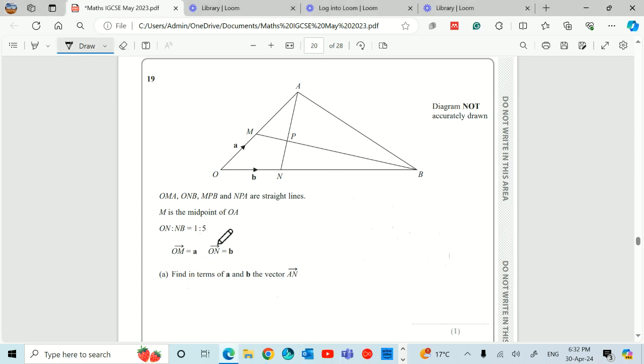Well, the vector AN, let's just write that down. AN is this here. So we're going to go from A to M. Now, M is the midpoint, that means this MA or AM is also A. So to go from A to M, we're going to go minus A, minus A plus B. So the vector AN is a simple one. It's minus 2A plus B.